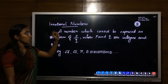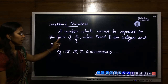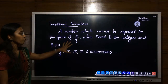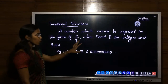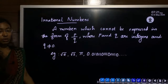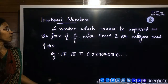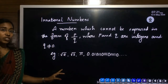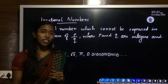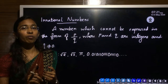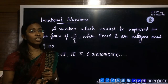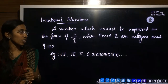Irrational numbers means a number which cannot be expressed in the form of p by q, where p and q are integers and q is not equal to 0. Before that, what is a rational number? A rational number means a number which can be expressed in the form of p by q, where p and q are integers and q is not equal to 0.